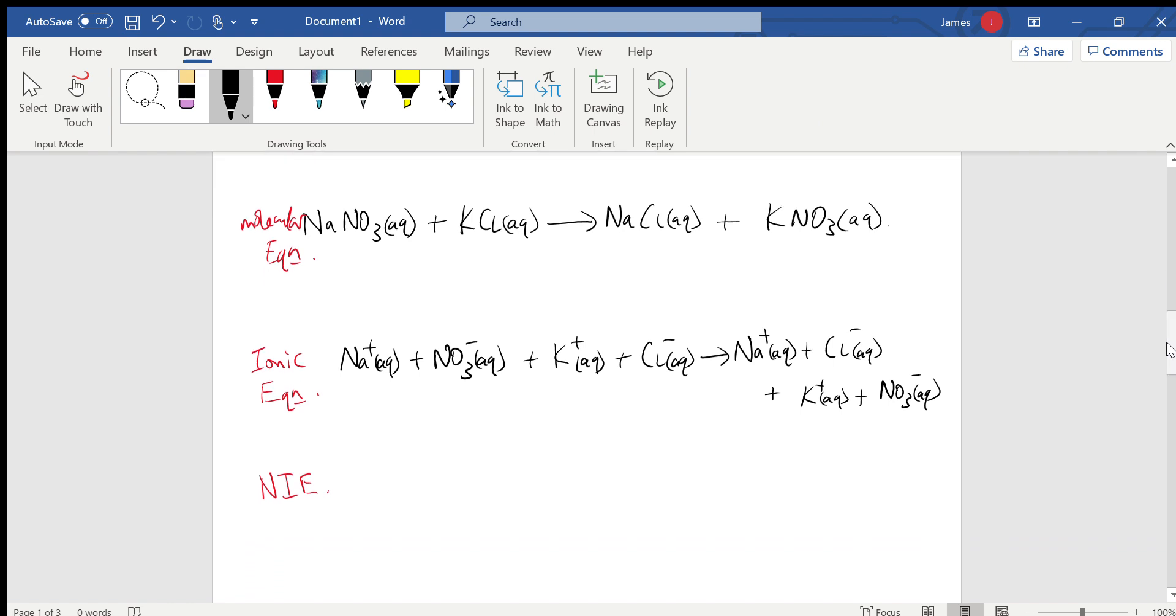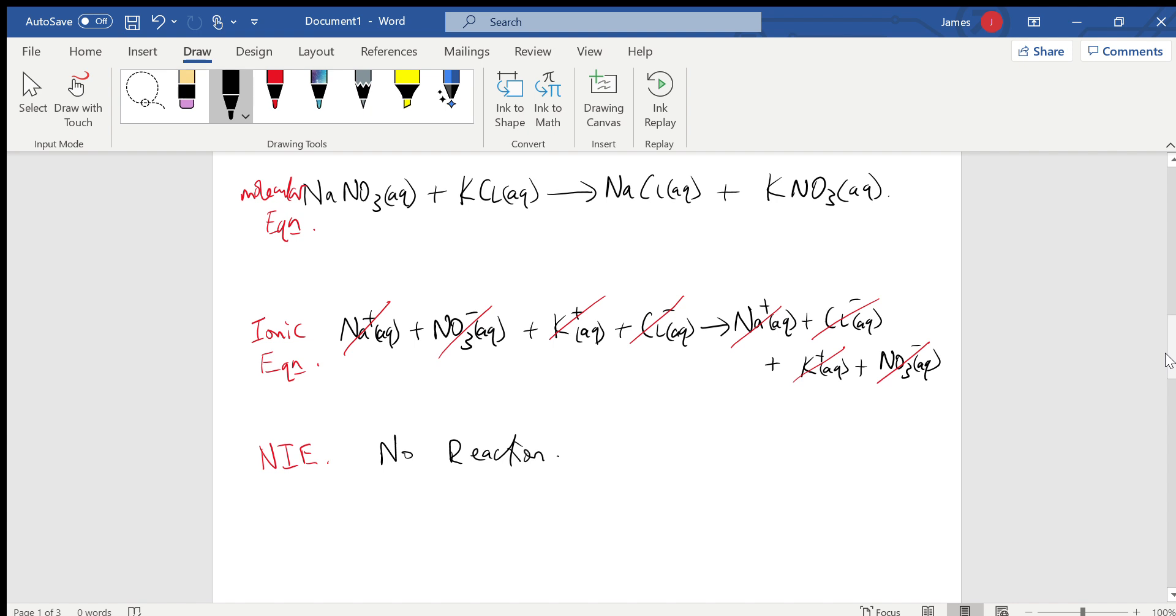When I write the net, I'm looking for a precipitate on the right and I don't see one. In fact, everything is a spectator. Sodiums are present on both sides, nitrate is present on both sides, potassium both sides, chloride both sides. So I've just learned that there is no reaction. So again, if I compare the net ionic equation with the molecular equation, I see that writing the molecular equation alone, the molecular equation could be misinterpreted.